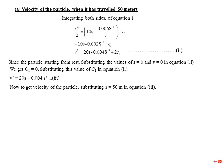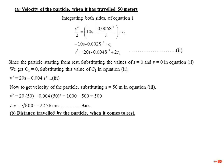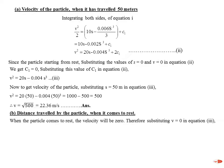For Part A, to find the velocity when the particle has traveled 50 meters, substitute S = 50 into Equation 3: v² = 20 × 50 − 0.004 × 50³. This gives v² = 500, so v = 22.36 m/s. That is the answer for Part A.